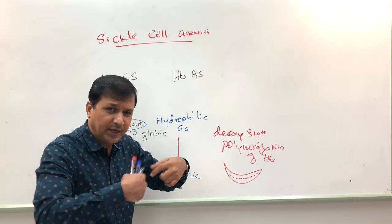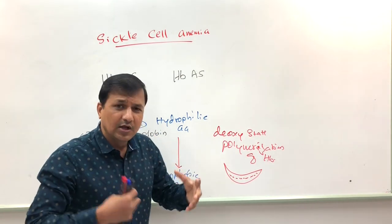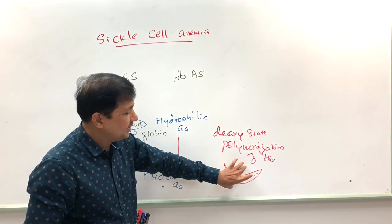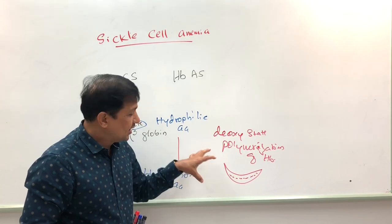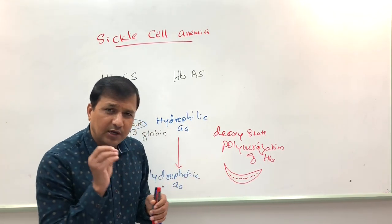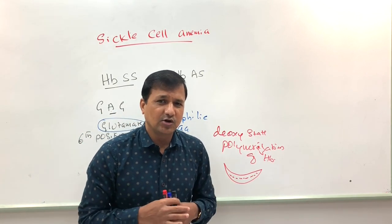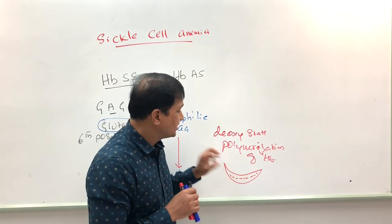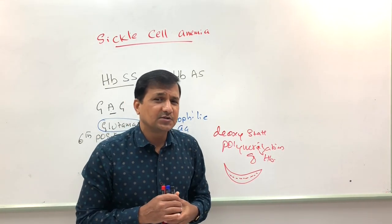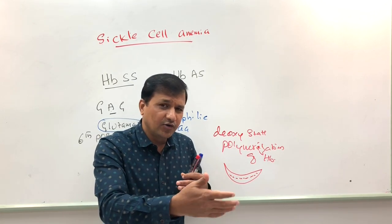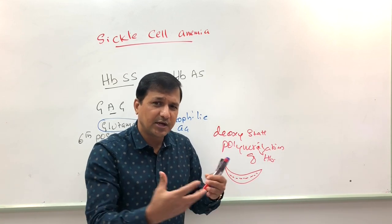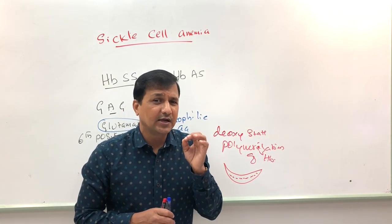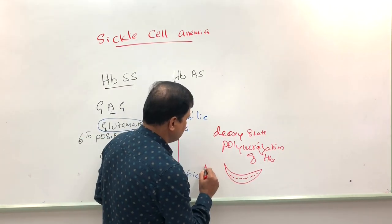Instead of the normal biconcave shape with good flexibility to pass through small capillaries, sickle cells have a rigid membrane and a rigid sickle shape. Because of this, these cells occlude small capillaries — causing veno-occlusion. When capillaries are occluded, the area supplied by those capillaries does not receive sufficient oxygenated blood, eventually causing the tissue to die — a micro-infarction.